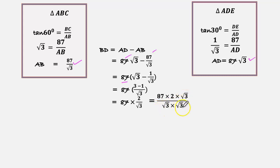√3 into √3 into √3, we know it is 3. So 87 into 2 into √3 divided by 3.